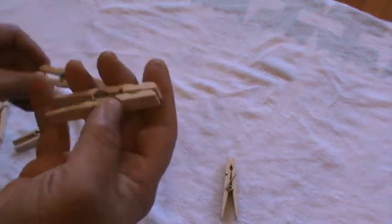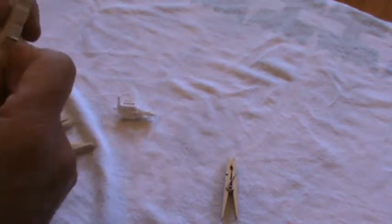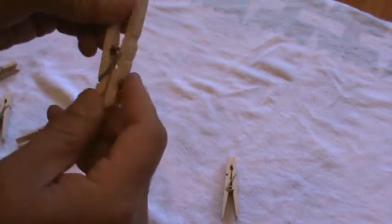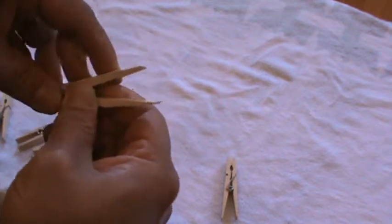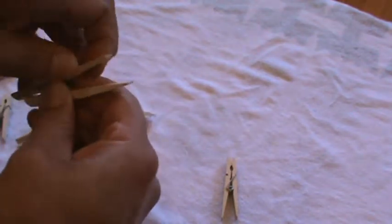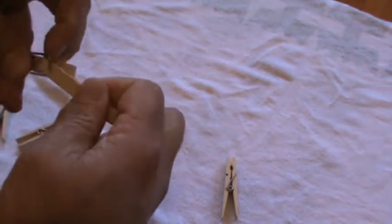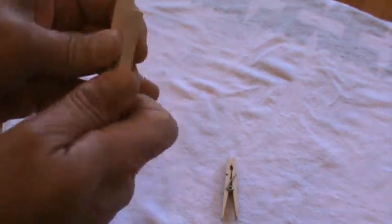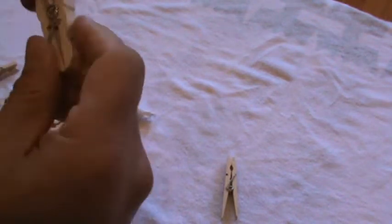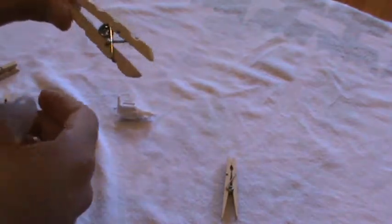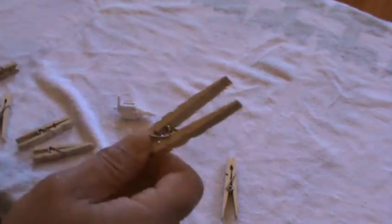If you want it to close like this one, you put the spring further towards the front part. So you take that, push it through, you can put it at that first notch there, that little clip, slide the other one out, turn it around, shove it back in, and there you get the front closing one.